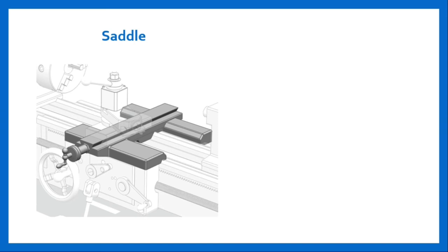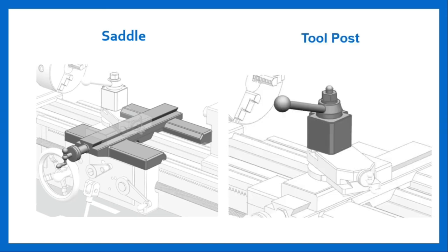The next component is the tool post. The tool post is mounted on the compound rest and provides a means of holding the cutting tool. The main function of the tool post is to hold and adjust the tool at a convenient working position. Manual lathe machines may have a variety of tool posts. A quick change tool post, like the one shown in the figure, is a convenient way to change tools. Different tool posts used in lathe machines include single screw tool post, four bolt tool post, open side tool post, and square turret tool post or four-way tool post.